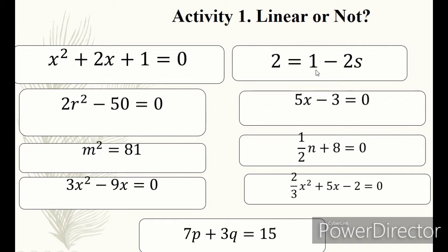2 equals 1 minus 2s. 5x minus 3 equals 0. One-half n plus 8 equals 0. Two-thirds x squared plus 5x minus 2 equals 0. 7p plus 3q equals b. From those 9 equations, let us identify which is linear and which is not. Get your pen and separate the linear equations from the quadratic equations. I'll give you 1 minute to answer.